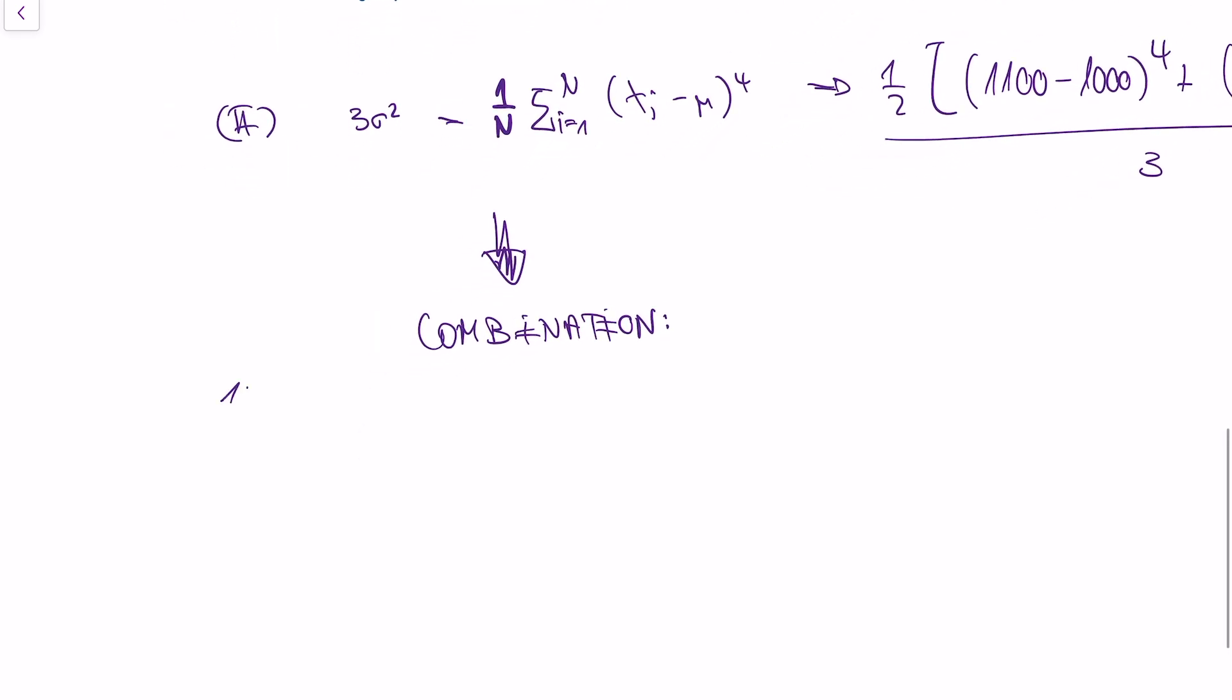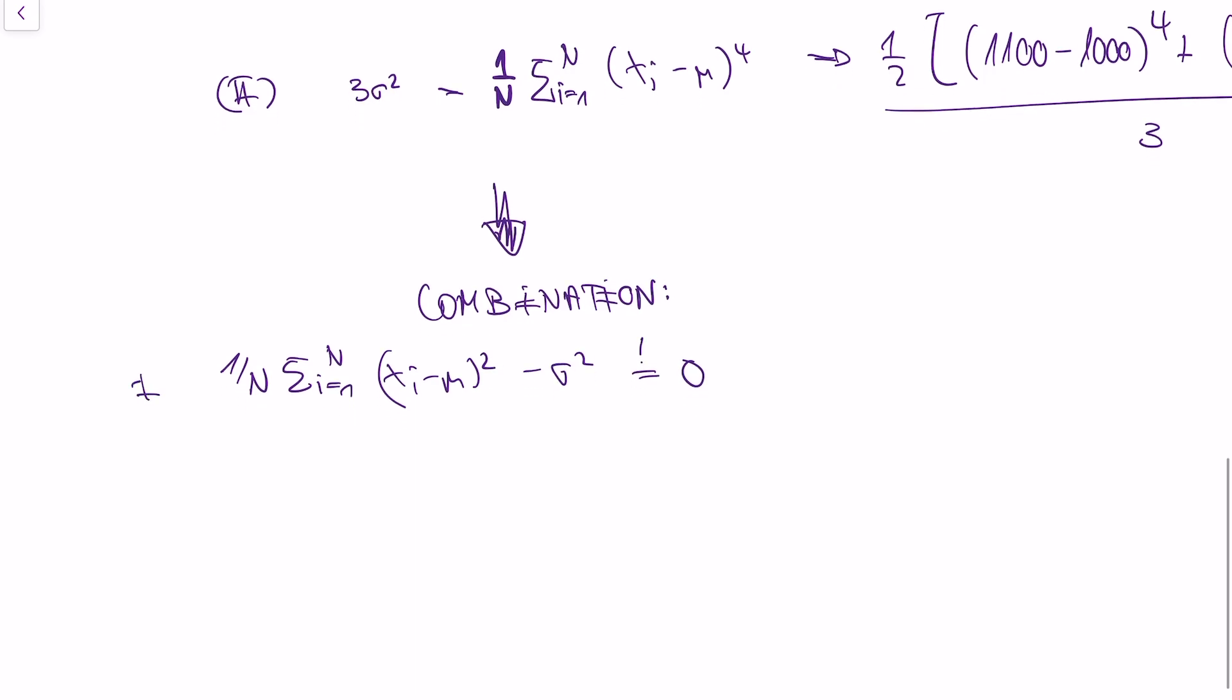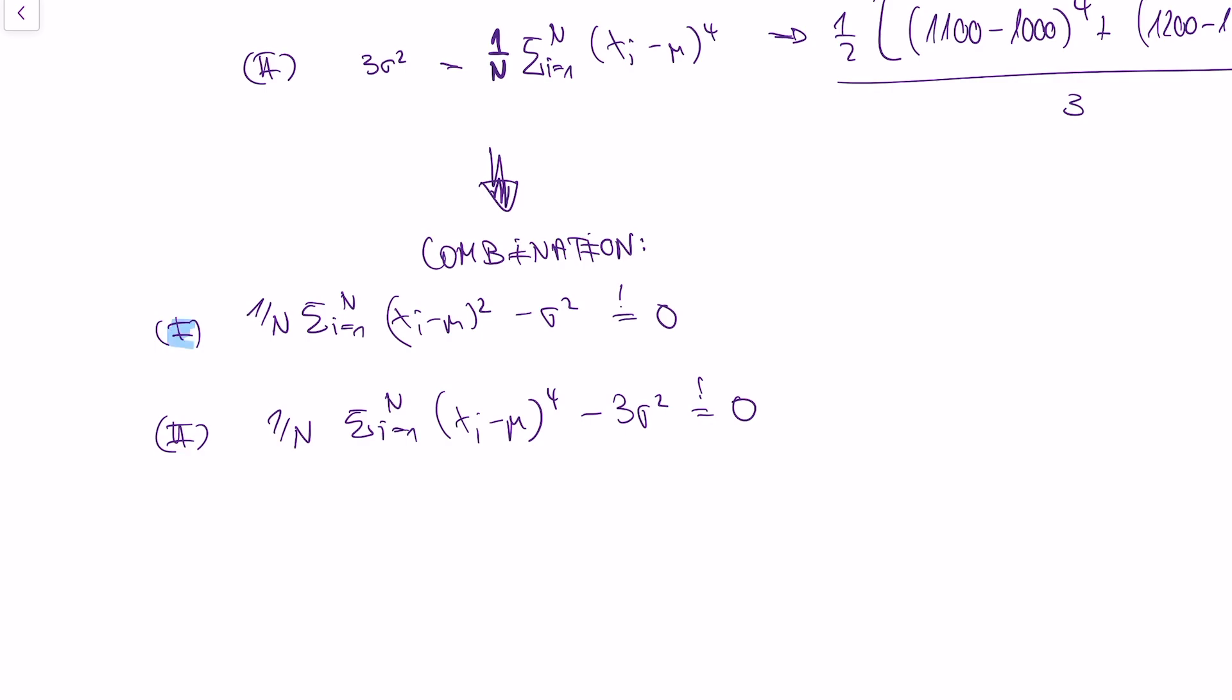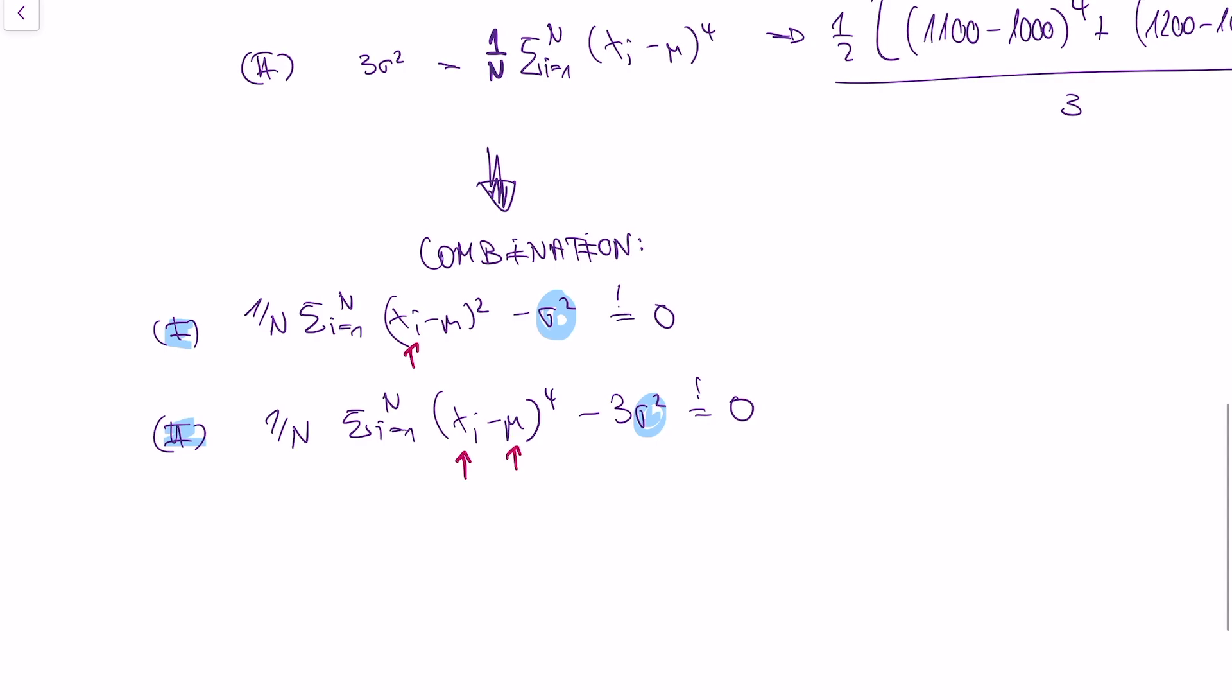So from the first equation, we know that one over n times our sample average minus sigma squared should be zero. And from the second equation, we know that our sample average minus three sigma squared should be zero as well. So if you look at those equations, then note that we have two equations, but only one parameter is unknown, the sigma. Right? The other parameters we know, we know what x is, this is our data. I told you that the expected value mu is known. So the only unknown that really remains is sigma. And remember a fact from math, if you have two equations, but only one unknown, usually there's just no solution that solves both equations. So what do we do?